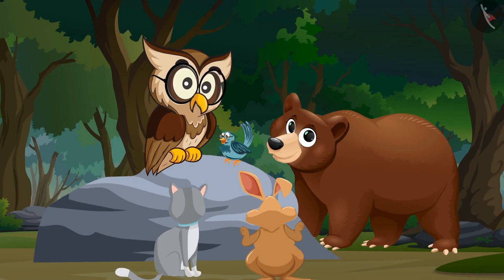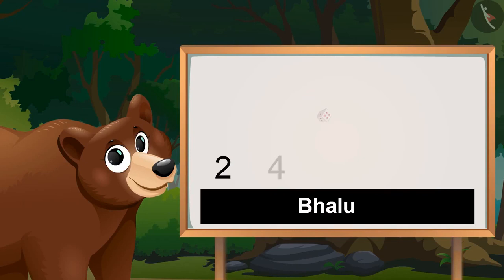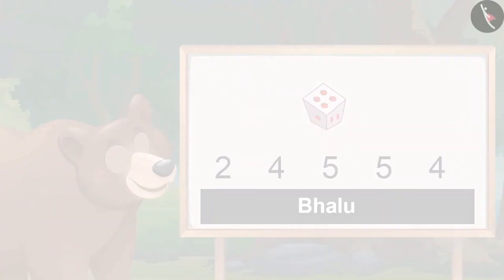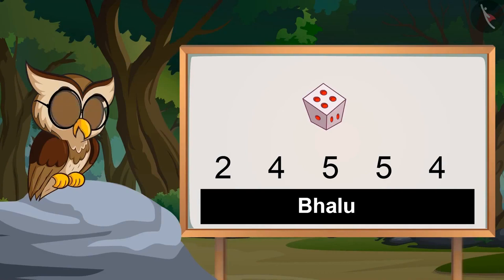Now Balu, it's your turn. Okay. Two, four, five, five, five, four. So Balu got these numbers on the dice.